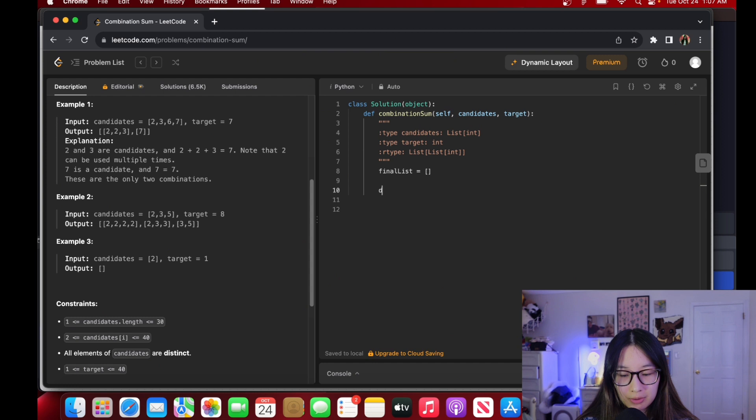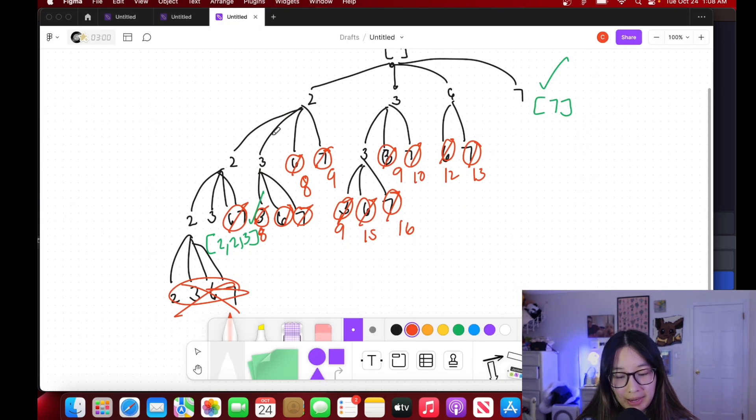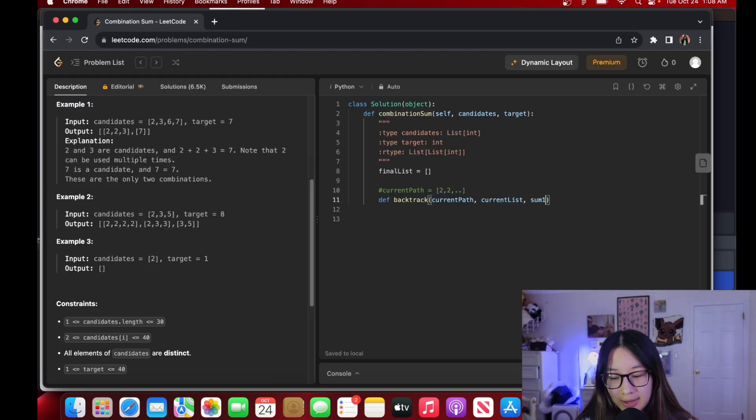Final list that we're going to return. We have our backtrack function. We have a current path, which could be equal to 2, 2 and then continuing on or otherwise. Then we have our current list that we're looking at, which will be the sliced list that we're going to create. Then we have our total sum which we're going to call sum1.